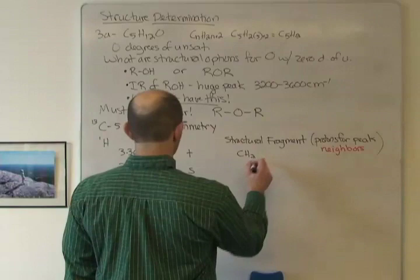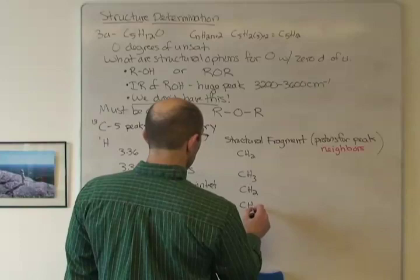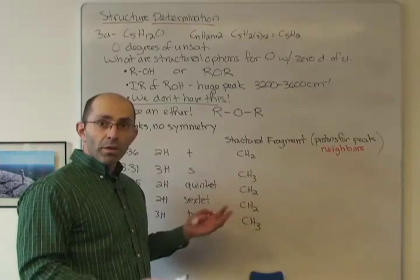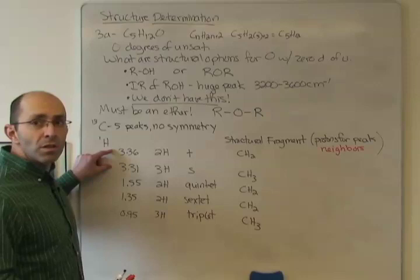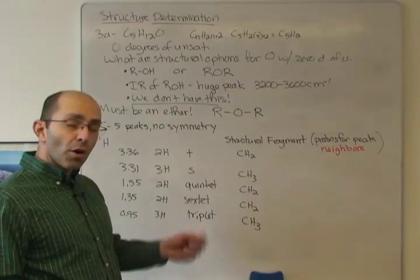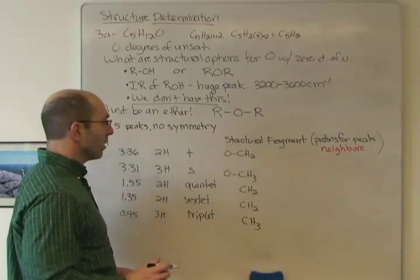It's telling us we have a CH2, CH3, CH2, CH2, CH3. Now our job is to figure out what that pattern looks like in terms of neighbors and other things that are around. We have two peaks that are below 3, very deshielded. It should be clear that those oxygens, those carbons are attached to oxygens. So we have an OCH2 and OCH3. This is really important right here.